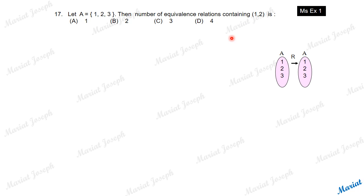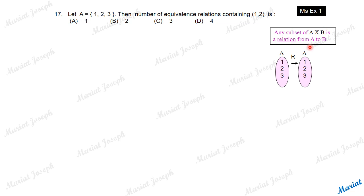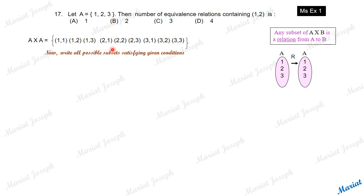Let's check. We are given set A with 3 elements: 1, 2, 3. The relation needs to be defined on the set, that means from set A to set A. Any subset of A cross B is a relation from A to B. In this case, we take set A itself, so any subset of A cross A is a relation from A to A.